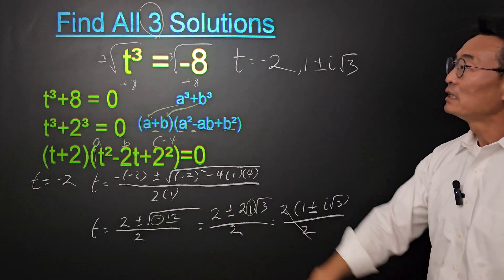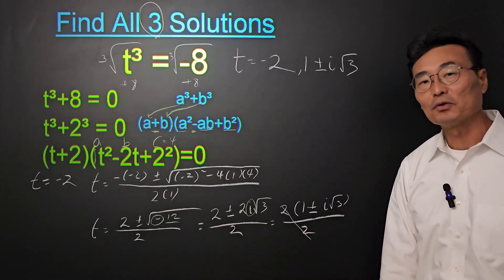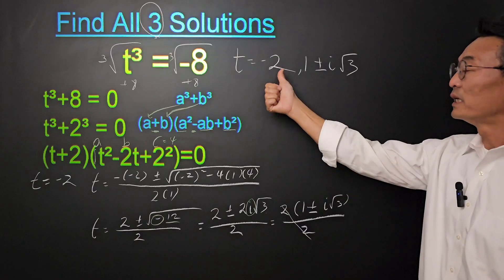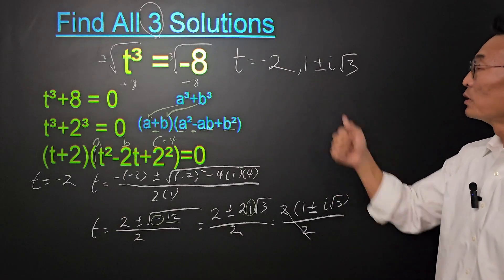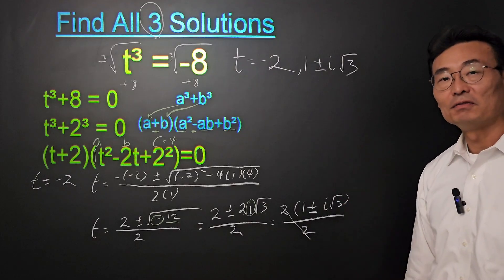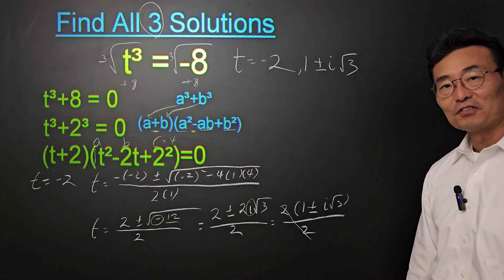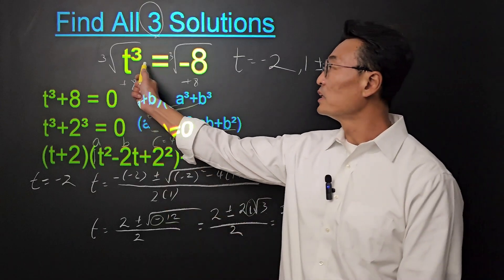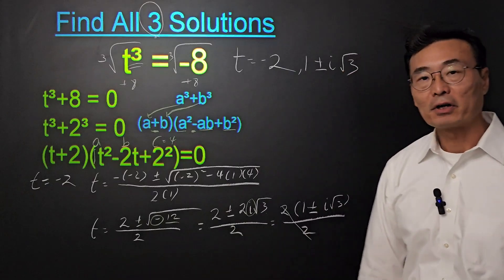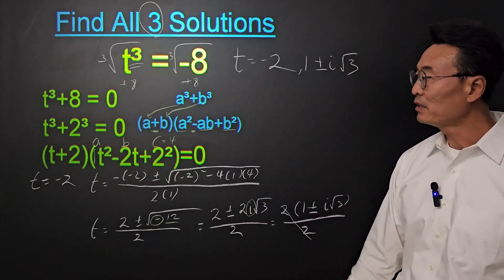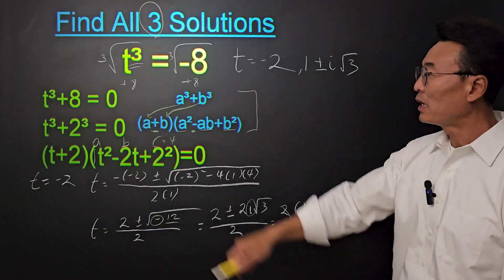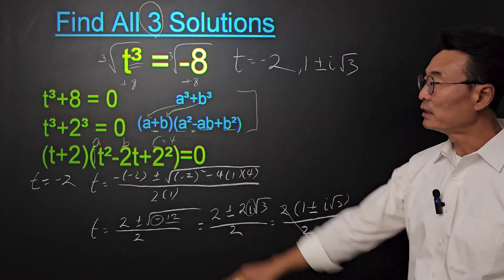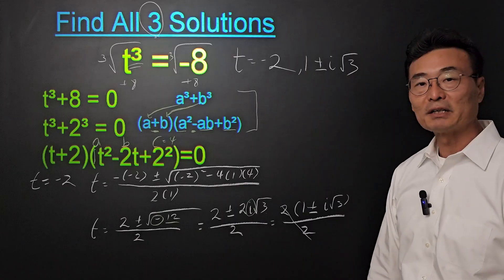So there you have it. Given the equation t cubed equals negative 8, we found negative 2, and 1 plus minus i root 3 is the total of 3 solutions. So the main point of this lesson was to show you that when an equation is to the third power, there are 3 solutions, and also how to factor a sum of cubic binomials.